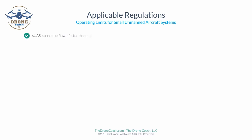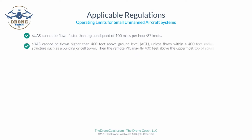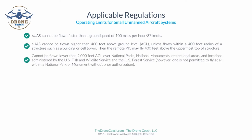Operation limits for a small unmanned aircraft: your SUAS cannot be flown faster than a ground speed of 100 miles per hour or 87 knots. The drone cannot be flown higher than 400 feet above ground level (AGL), unless it's flown within a 400-foot radius of a structure such as a building or cell tower, in which case you may fly 400 feet above the uppermost top of that structure.